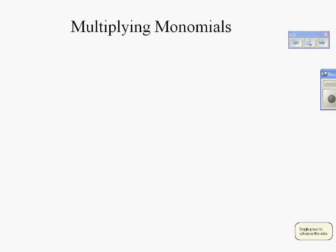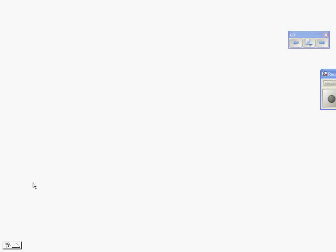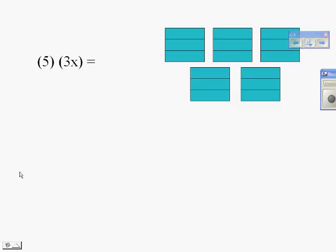Today we're going to look at multiplying monomials. We can see here we're doing 5 times 3x. We've done that before — back in third grade you learned about those groups. There's one group of 3x, so 5 groups of 3x would be 15x's.